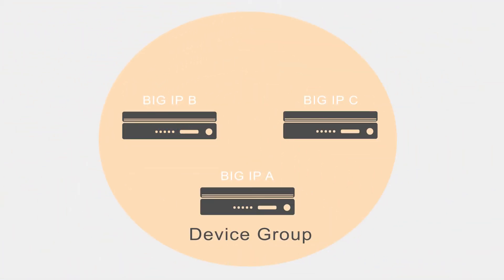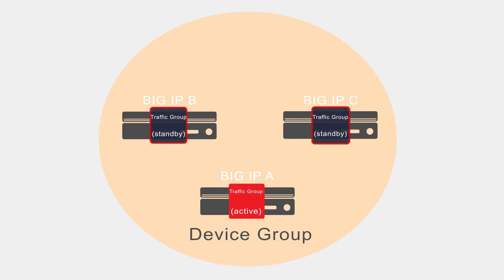But with a sync failover device group, the floating addresses for an application flow live in a special container called a floating traffic group. A floating traffic group is a logical container for the BIG-IP floating IP addresses for a particular application flow. On Failover, it's the traffic group that floats to another device rather than an individual floating IP address.